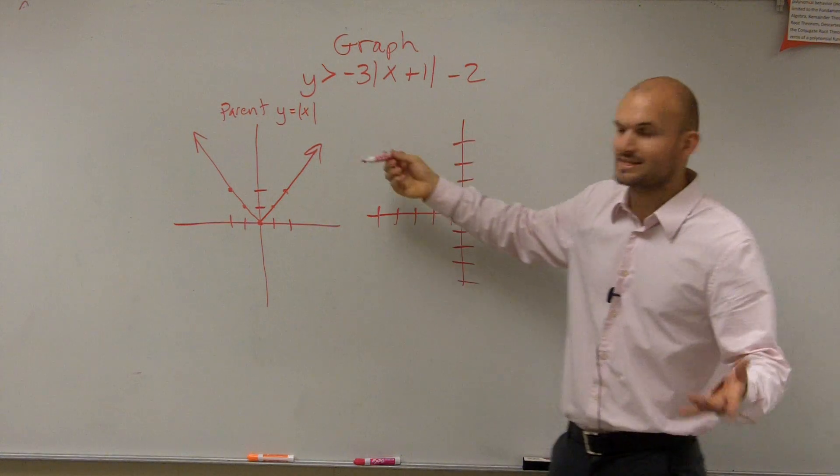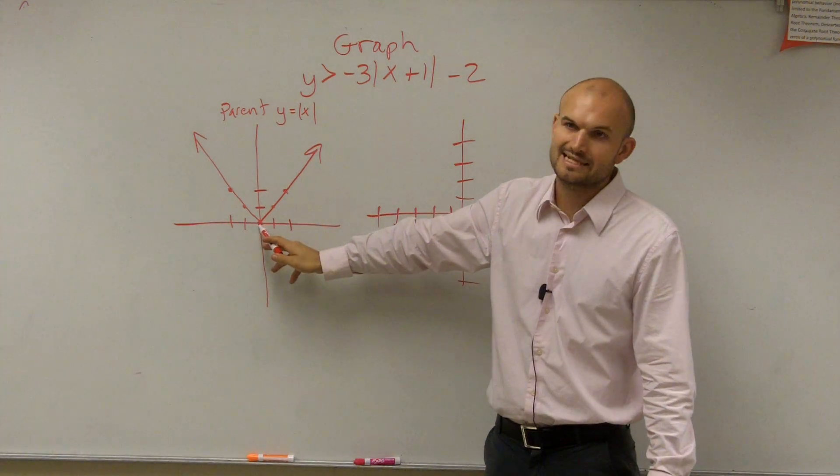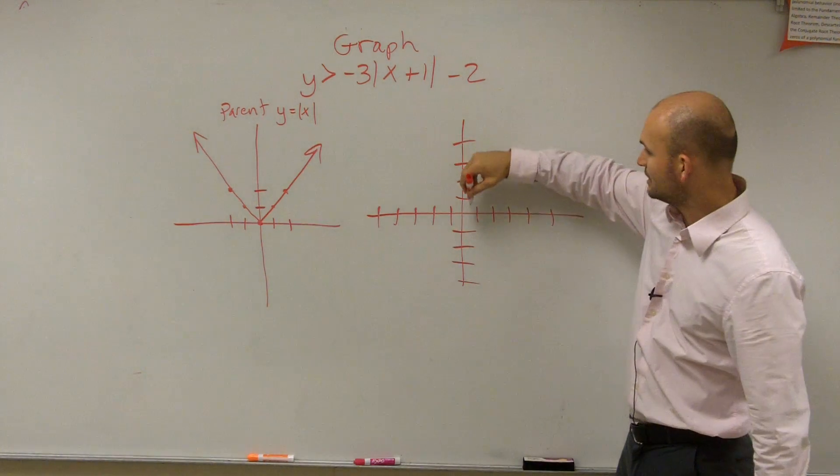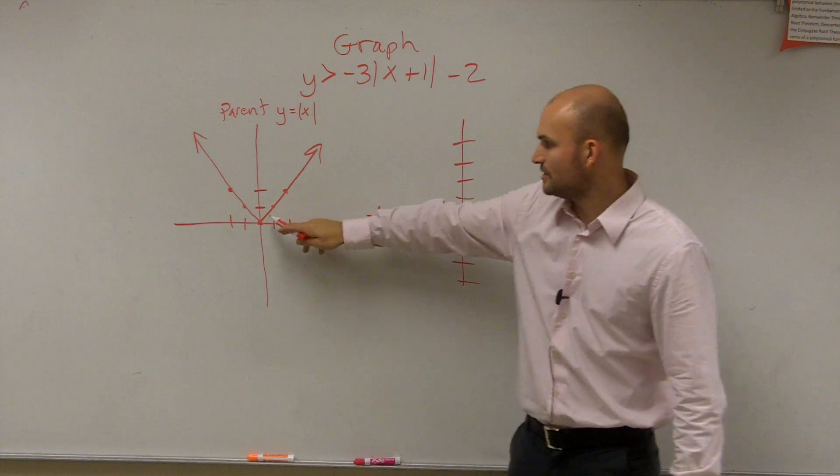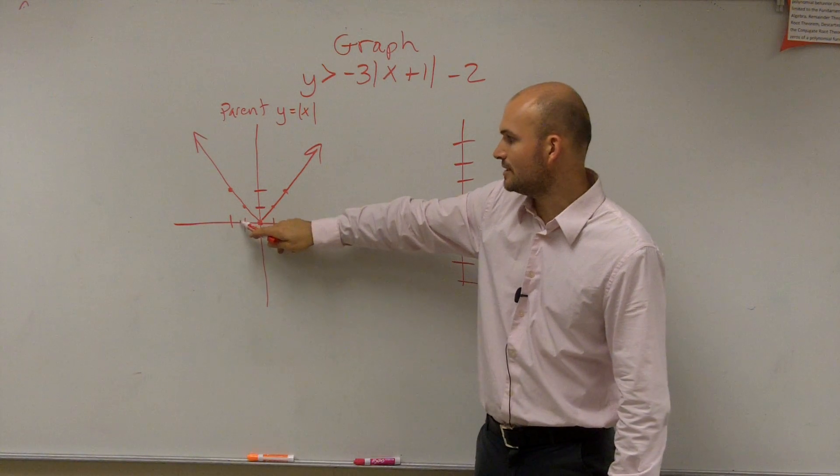Very good. So I could use any one of these points, but I always like to use the dot at 0, 0. So that's telling me to go left 1, down 2, right? So this point has now shifted left 1, down 2.